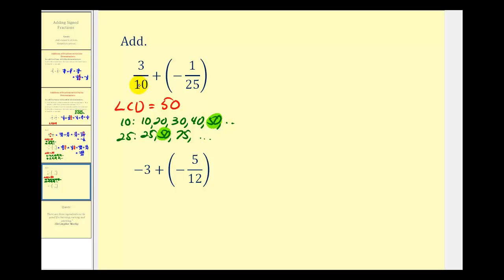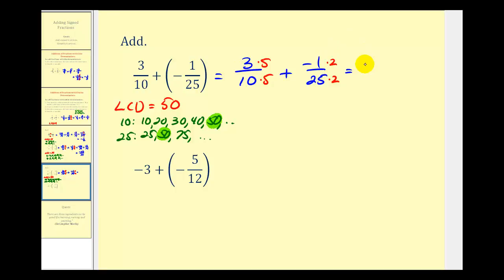We write both fractions with a denominator of fifty. For three-tenths, since ten times five is fifty, we multiply by five over five. For negative one twenty-fifth, since twenty-five times two is fifty, we multiply the top and bottom by two. This gives us fifteen-fiftieths plus negative two-fiftieths. Fifteen plus negative two equals thirteen, which doesn't simplify, so thirteen-fiftieths is our sum.